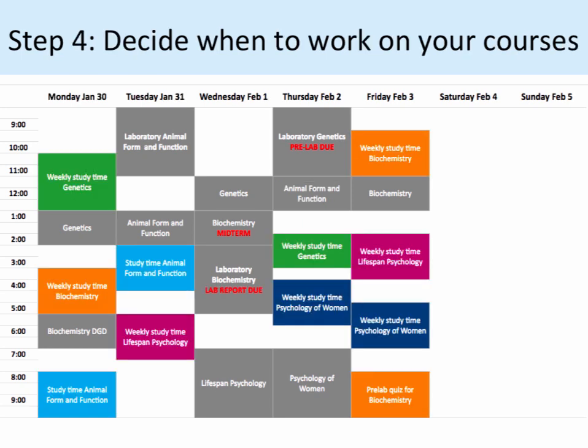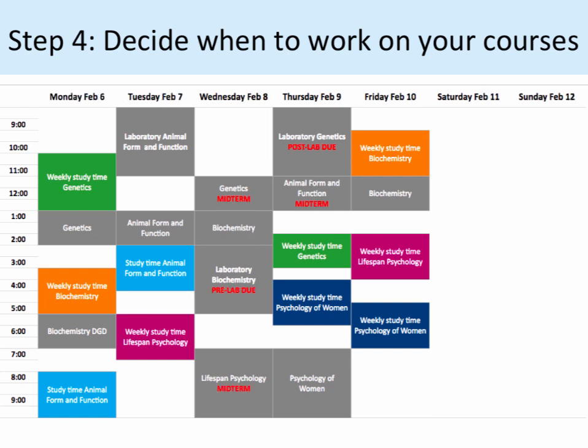Decide what time during the week is best for you to work on each of your courses. Block it off in your calendar now for the entire semester, then do this for the rest of your classes. In this example, I have put 4 hours of study time aside per class per week. Decide how much time you will need to work on all of the assignments you will have due throughout the year.